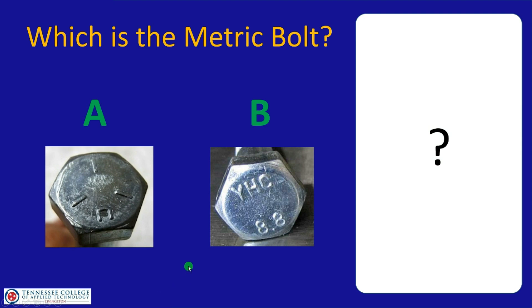Now that you know the difference between metric and standard head markings, you can tell which type a bolt is. Metric bolts have numbers on the head; standard bolts have marks or slashes. So the bolt on the right — B — is the metric bolt.